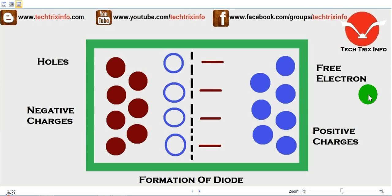As you can see on the screen, a section of P-type material joined to a section of N-type material forms the diode. This is the P-type material over here and this is the N-type material on the right-hand side.